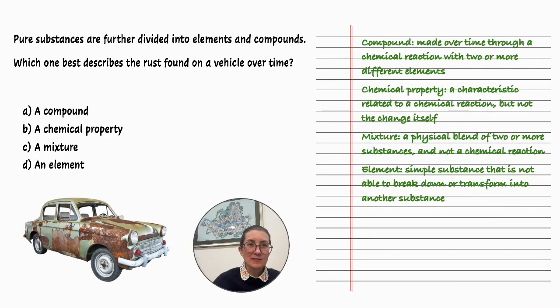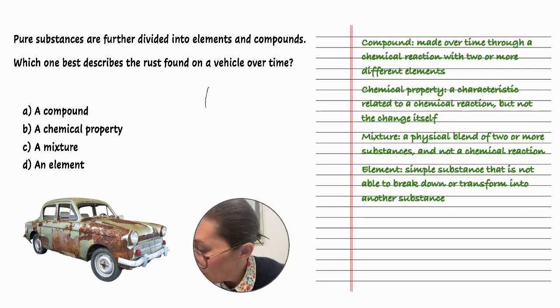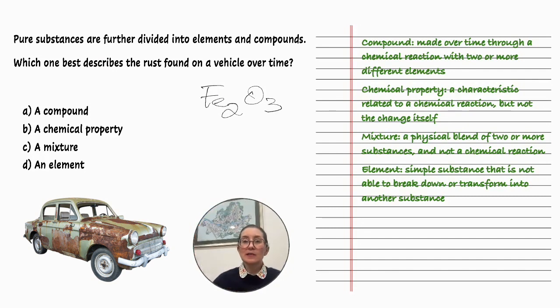Pure substances are further divided into elements and compounds. Which one best describes the rust found on a vehicle over time? A: a compound, B: a chemical property, C: a mixture, or D: an element. Let's look first at what rust is. Rust is ferric oxide or iron oxide and is formed through a chemical reaction. I'm going to work backwards on these.